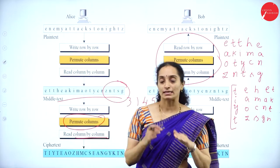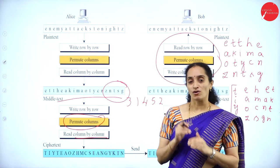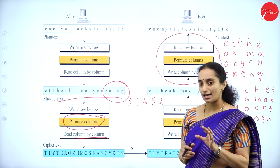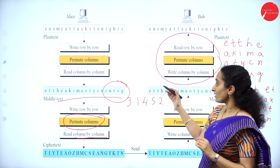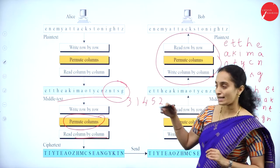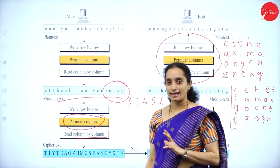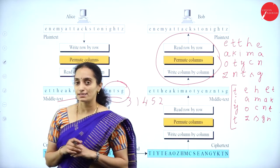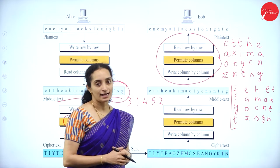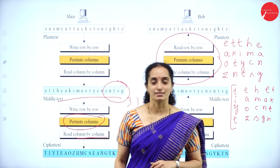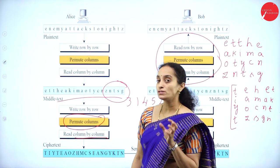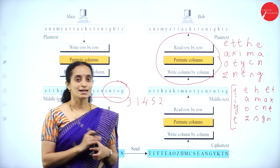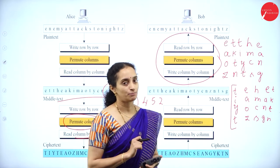That is what reduces the possibility of a pattern attack. There are some chances that the adversary can apply the same key set on the middle plaintext, but the possibility of a pattern attack is very much less in the case of double transposition ciphers. This covers the transposition ciphers generally used in cryptography.